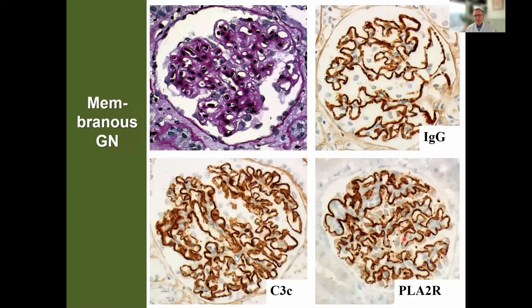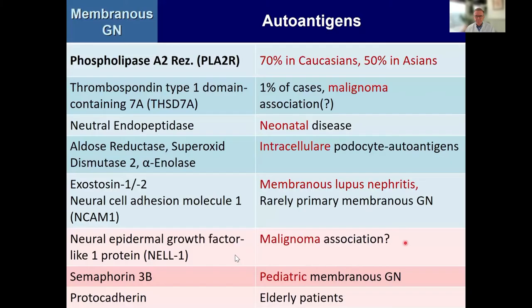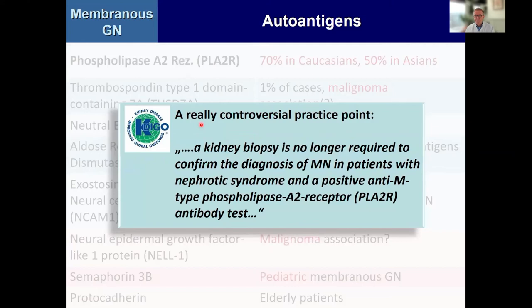Let's change topic to membranous nephropathy. We now have a plethora of autoantigens and every month there's a new one — even this list is no longer complete; I just saw yet another one yesterday. But at least for Caucasians, and I believe in India, most of our patients have phospholipase A2 receptor autoantibodies. These receptor autoantibodies can now be used to make the diagnosis.